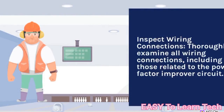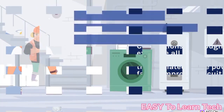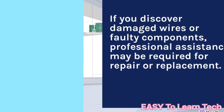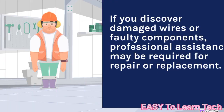Inspect wiring connections: thoroughly examine all wiring connections, including those related to the Power Factor Improver Circuit. Tighten any loose connections and ensure proper insulation. If you discover damaged wires or faulty components, professional assistance may be required for repair or replacement.